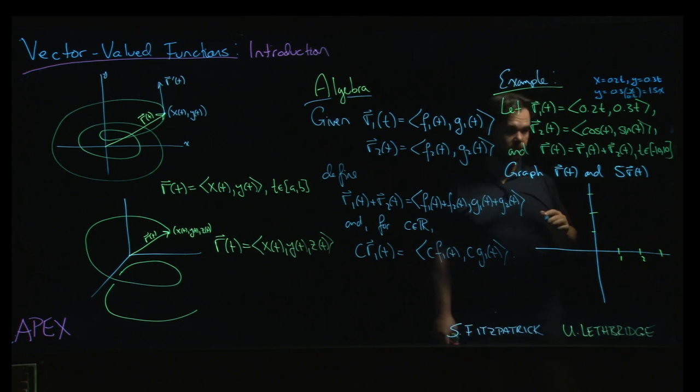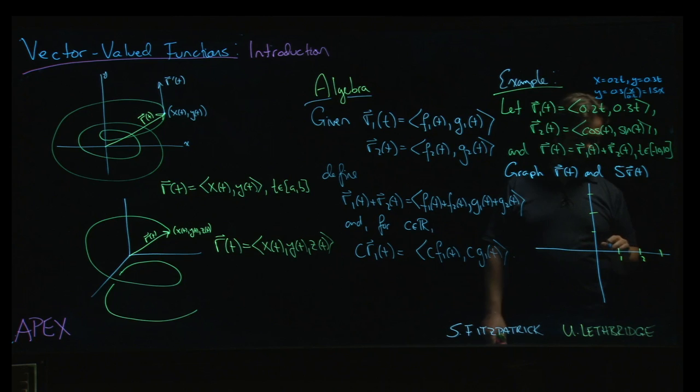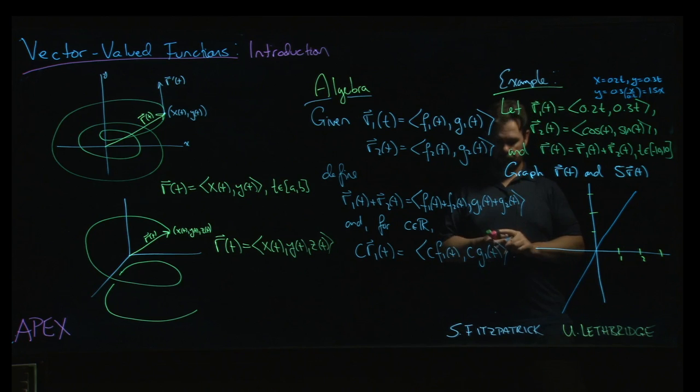So that is just a straight line with slope 1.5 through the origin, looks something like that.